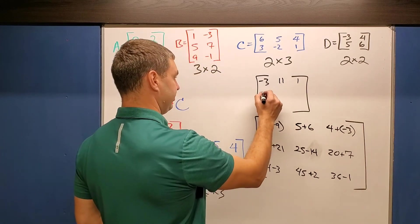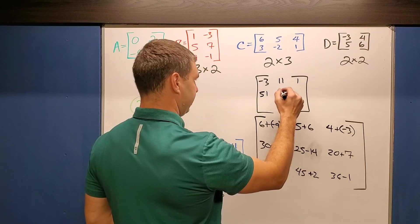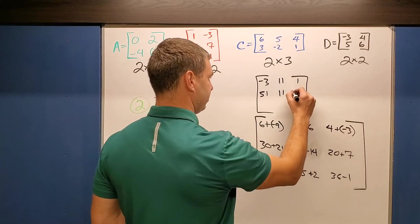30 plus 21 is 51. 25 minus 14 is 11. 11 again. And then 20 plus 7 is 27.